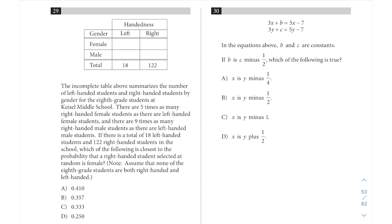For question 29, the incomplete table above summarizes the number of left-handed students and right-handed students by gender for the eighth grade students at Keisel middle school. There are five times as many right-handed female students as there are left-handed female students, so for females, if we call left-handed x, that means right-handed would be 5x.